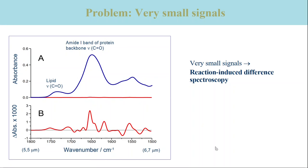Such small absorbance changes cannot be detected by comparing the absorbance spectra of different samples. Therefore, special techniques are needed. They are based on triggering the protein reaction of interest in the infrared cuvette in order to avoid opening the cuvette and changing the sample. They allow detection of very small absorbance changes down to environmental changes of single amino acids in large proteins or protein complexes with, for example, 5000 amino acids.